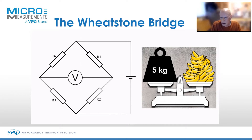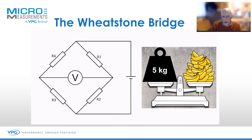To liken it to a traditional kitchen balance: if R1 and R2 are the same value — like the same size weights on a scale — the pointer here will be at zero. Equally, if these two are the same, this point will be at zero, or halfway between the excitation voltage.